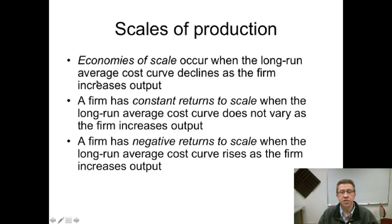Constant returns to scale. This means the average cost curve always stays constant as the firm increases output. Negative returns to scale says as the firm produces more output, their average cost increases.